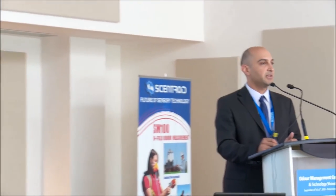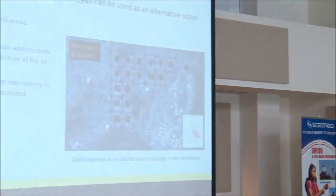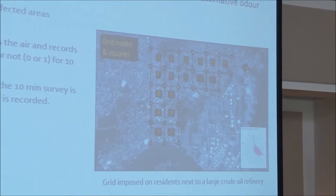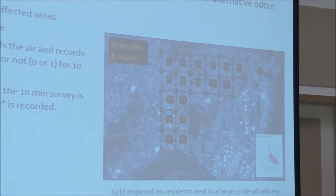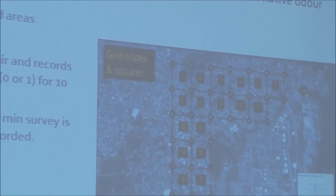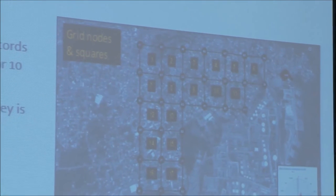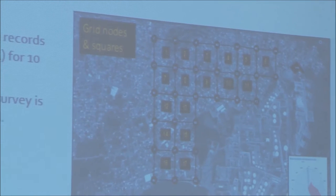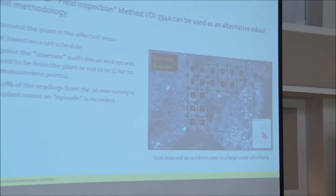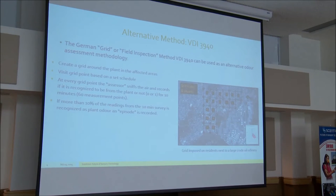There is another way, developed in Germany, called the grid method or field inspection. It's based on the standard VDI 3940, and basically this does not use any source testing or any dispersion modeling. You go to the site where the complaints are and you draw out a grid. The numbers are just the identification of each grid position. In each position you make measurements at each grid node — I think Professor Gallo was talking about this yesterday.